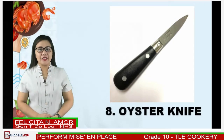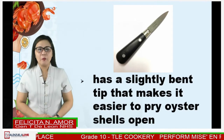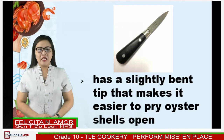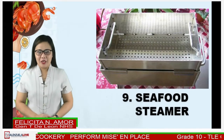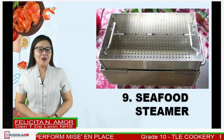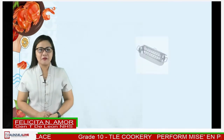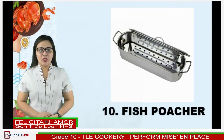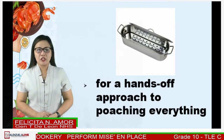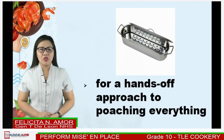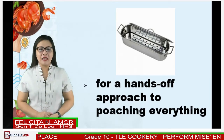Another kitchen tool is the oyster knife — it has a slightly bent tip that makes it easier to pry oyster shells open. 'Pry' means to pull apart, extract, or detach. Next is the seafood steamer — it is equipment used for quick-steamed fish and vegetables. The last is the fish poacher — for a hands-off approach to poaching everything from fish to beef to vegetables. One definite advantage of poaching is that the food will turn out succulent and tender, which is certainly a desirable outcome for fish.